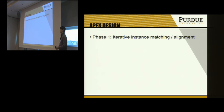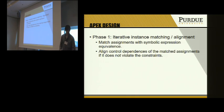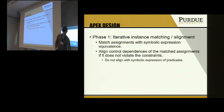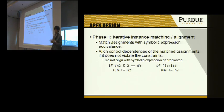Our algorithm consists of three steps. In the first step, we try to match assignments using symbolic expression equivalence, and align their control dependencies if this does not violate the constraints. We do not use symbolic expressions of predicates to align control dependencies, because in many cases the same predicates actually have different symbolic expressions — as seen in the previous example where two if statements should be aligned but have completely different symbolic expressions.